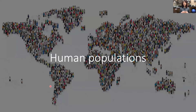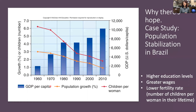Today we're going to talk about one population in particular: the human population. I'm going to introduce this graph. There's a lot going on — a lot of data — so I'll just break it down for you. Here along the x-axis, we have year from 1960 to 2010. On the primary y-axis, we have growth in percent or children in number, going from zero to seven.